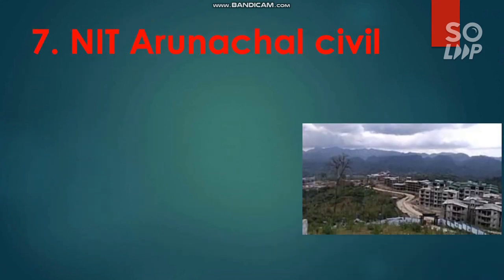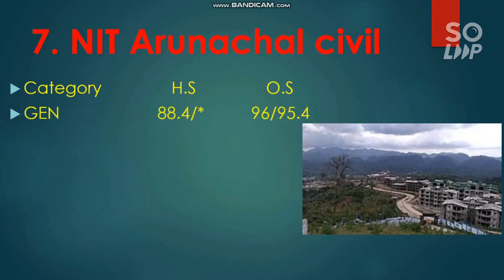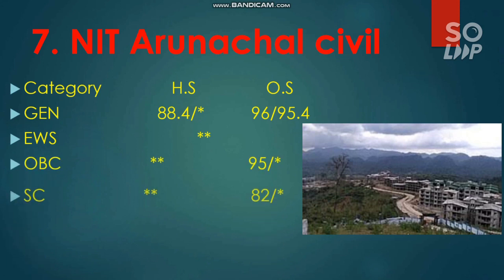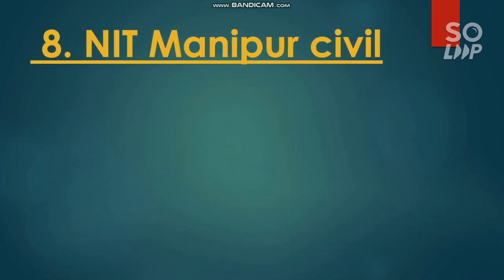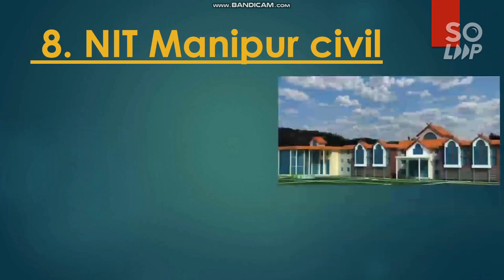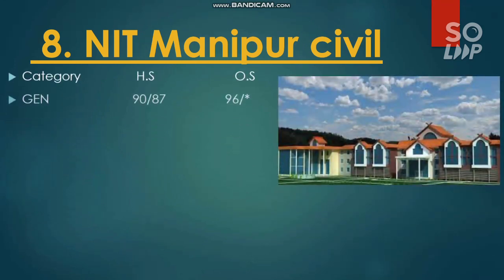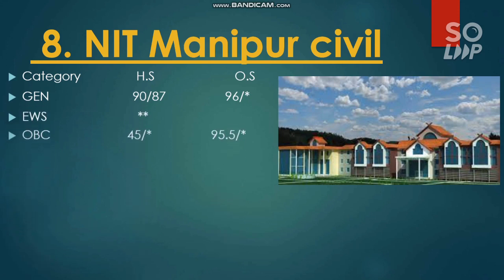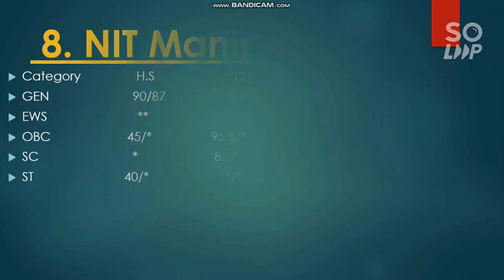NIT Raipur has Civil Engineering with the lowest cutoff. For General: 96 and 95.4 percentile. For EWS: no seat reserved. For OBC: 95 percentile. For SC: 82 percentile. For ST: no seat reserved for other state candidates. Next, NIT Manipur also has Civil Engineering with the lowest cutoff. For General: 96 percentile. EWS: no seat reserved. OBC: 95.5 percentile. SC: 83 percentile. ST: no seat reserved.